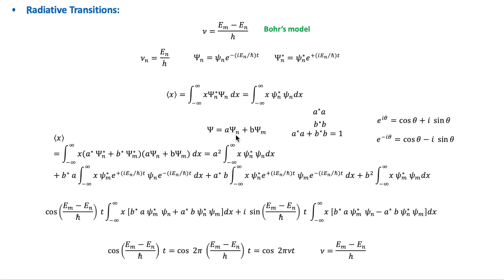Using the wave function during the time of transition, the expectation value of position is given by an equation whose first and last integrals do not vary with time. The remaining two integrals vary with time, and using the exponential expressions we can write these terms showing a real part that varies sinusoidally. This shows that the electron's position oscillates sinusoidally with frequency (EM minus EN) over H, since the argument equals two pi times (EM minus EN) over H times t.